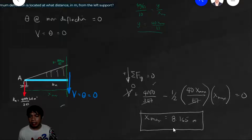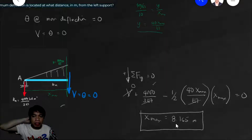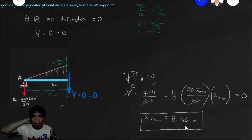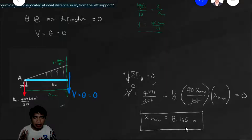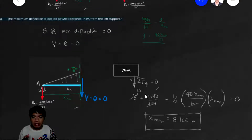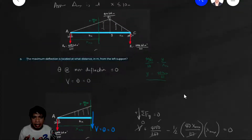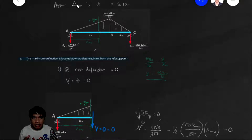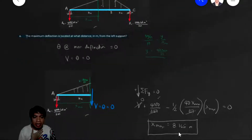So x max is 8.165 meters — that means the maximum deflection is located at 8.165 meters from the left support. This confirms our assumption that the maximum deflection is located in the first segment, since we assumed x less than or equal to 10, and 8.165 is indeed less than 10. So our assumption is correct.